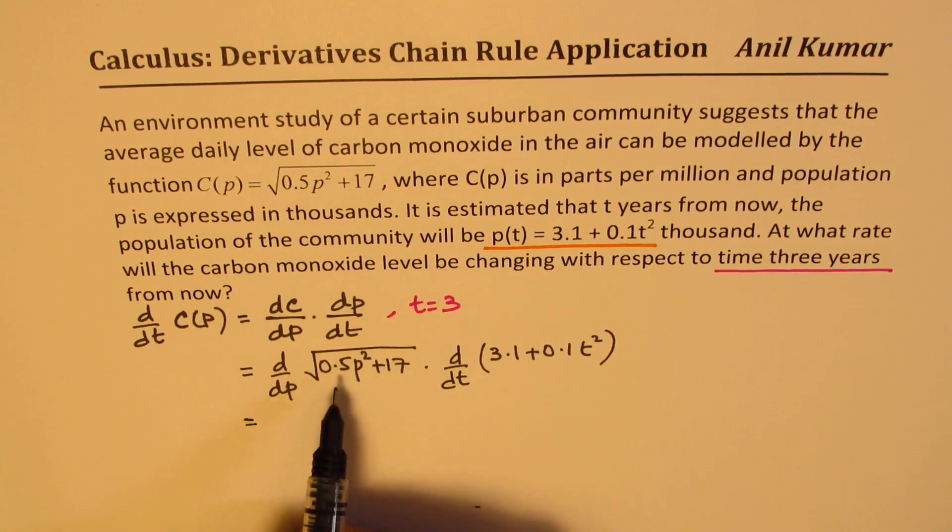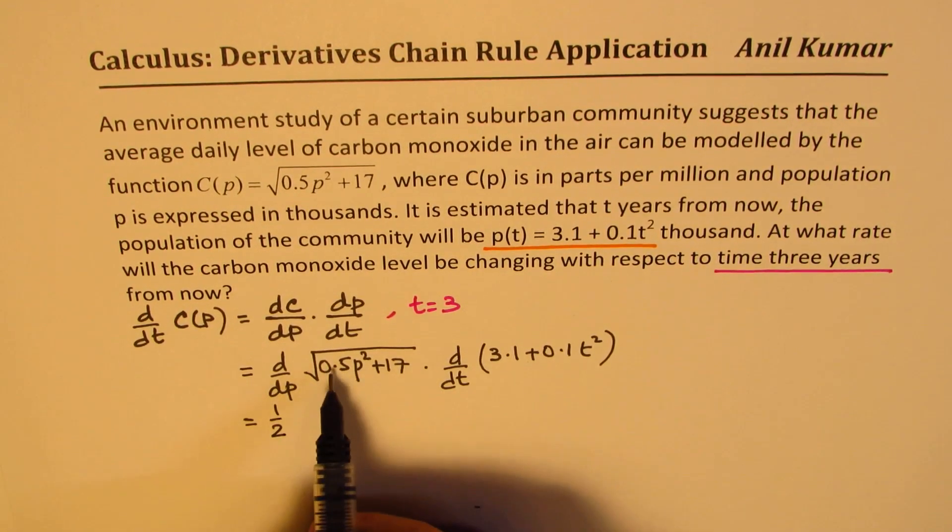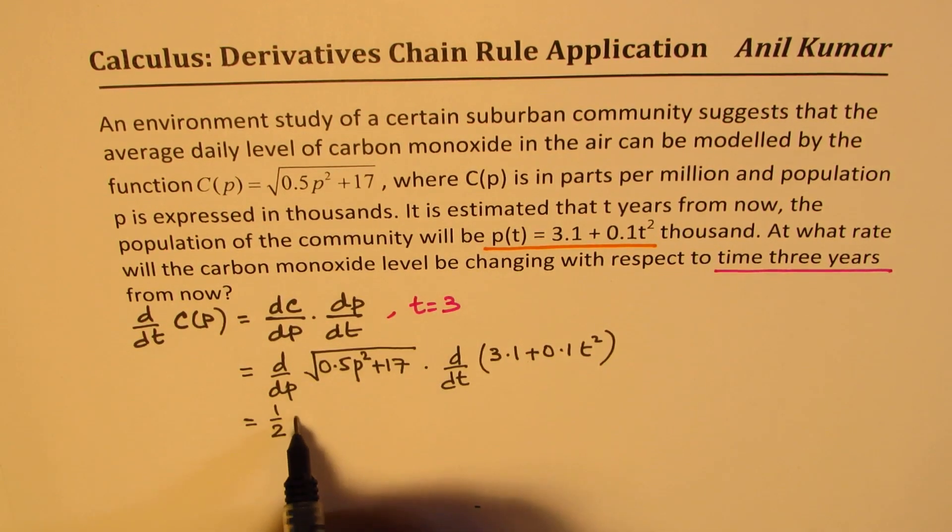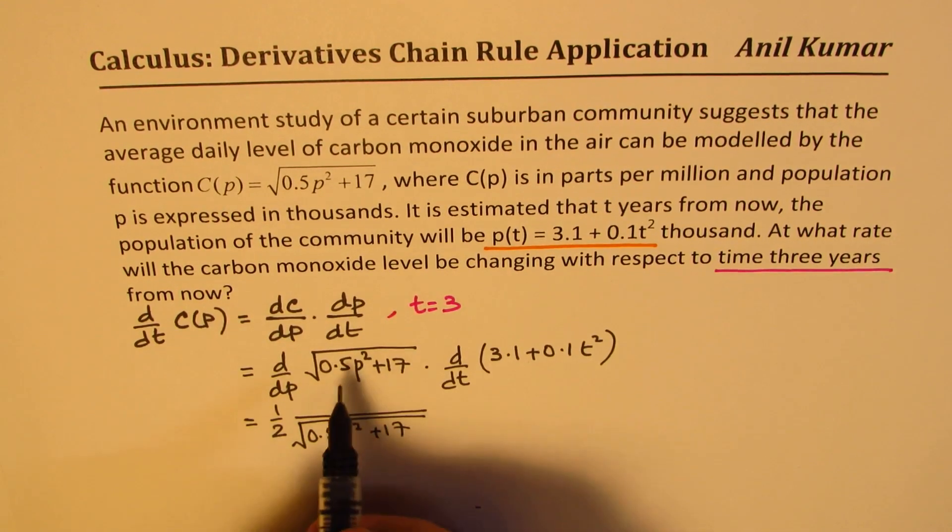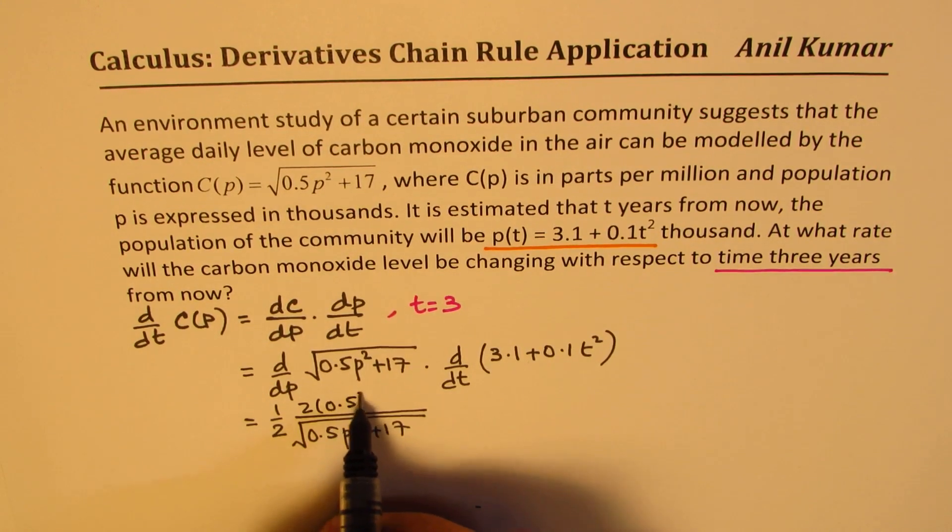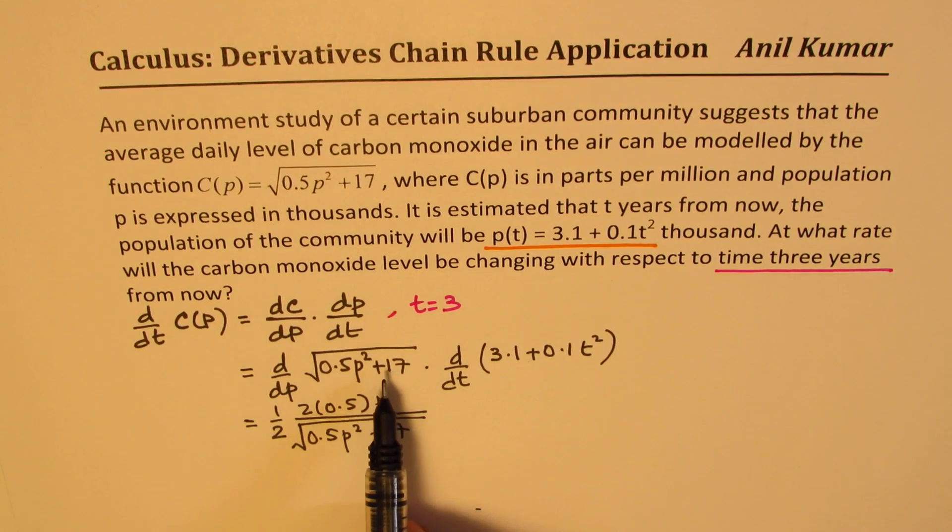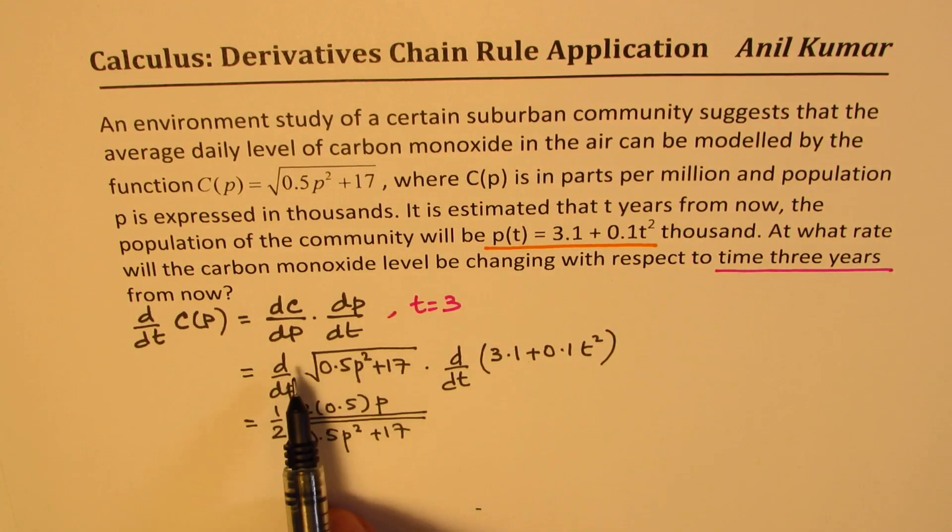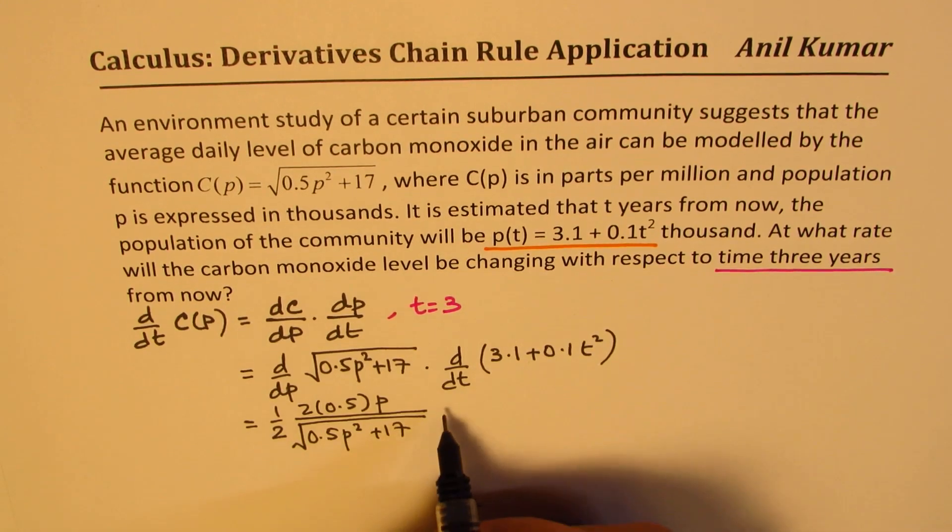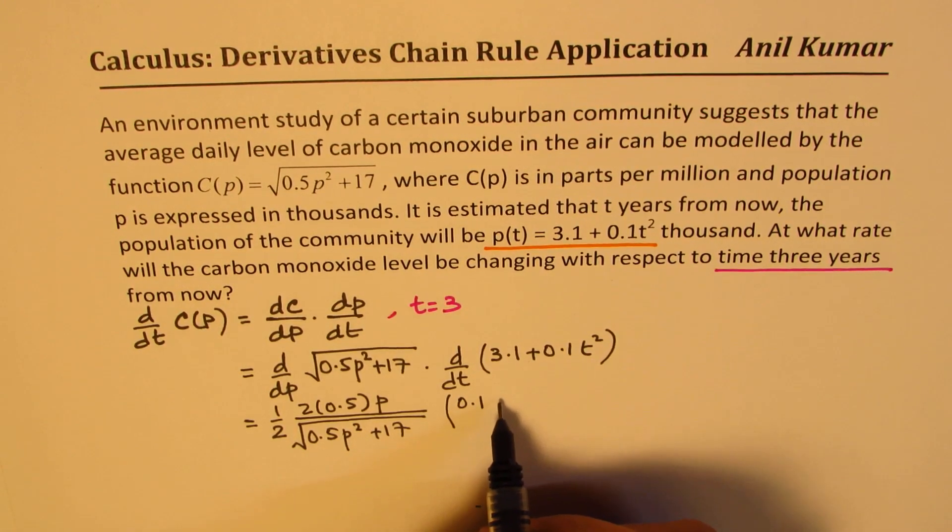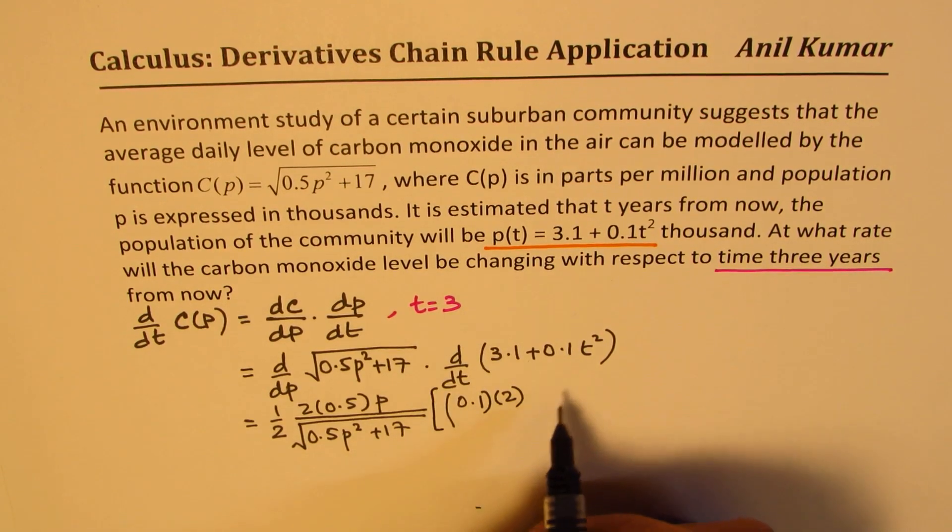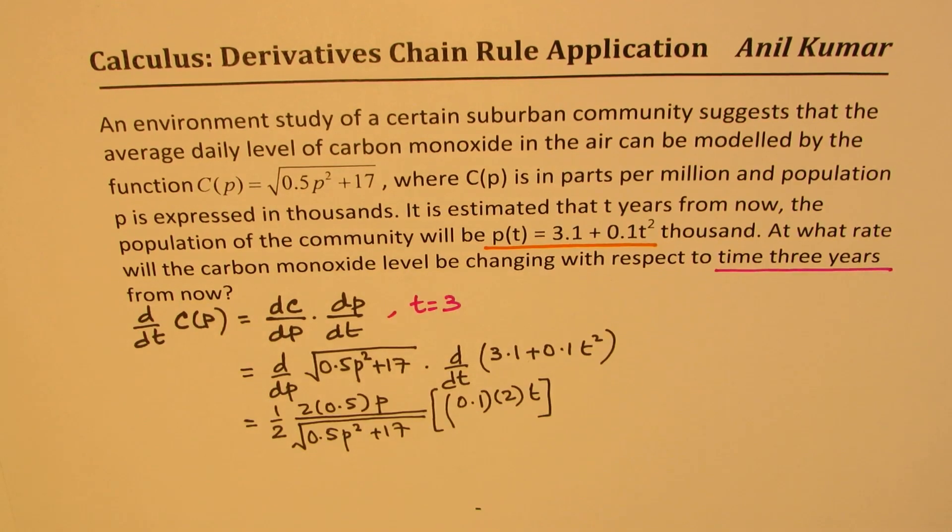So we get here, derivative is half, this to the power of minus half, which I could write as within the square root denominator, 0.5p² + 17 times derivative of inside function, which is 2 times 0.5 times p. So that is the derivative of the first part, the outer function times the derivative of inside function will be, that is a constant, so we get 0.1 times 2, 2t. So that becomes the derivative.